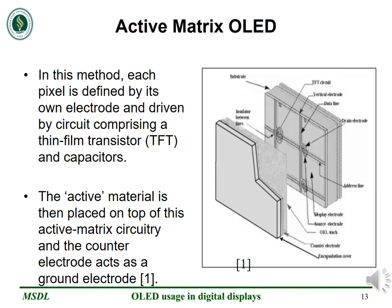The active matrix organic LED makes use of thin film transistor arrays and storage capacitors to address each pixel. A thin film transistor TFT is a special kind of field effect transistor which is made by depositing thin films of a semiconductor active layer. The capacitor used here is aimed at retaining the information during a frame period. The active material — LCD or organic LED — is then placed on top of this active matrix circuitry, and the counter electrode, which is not patterned, acts as the ground electrode.